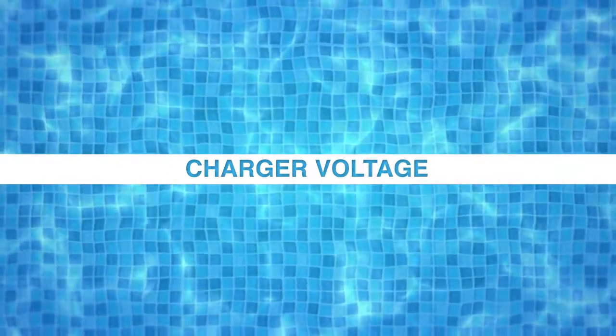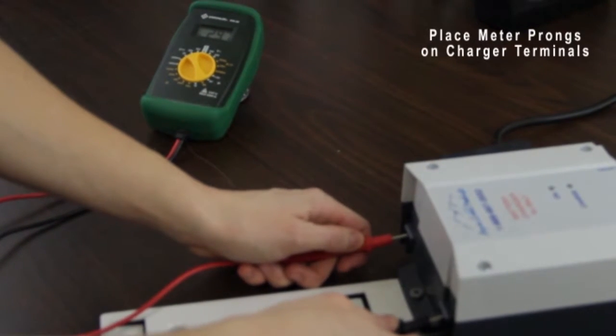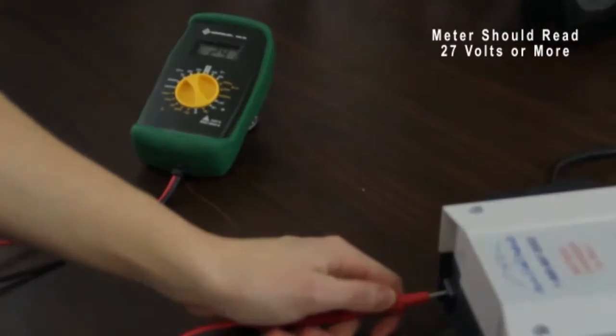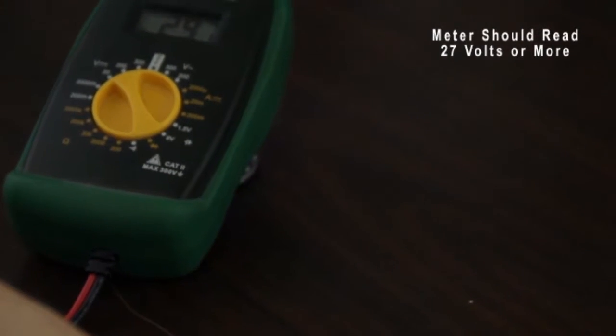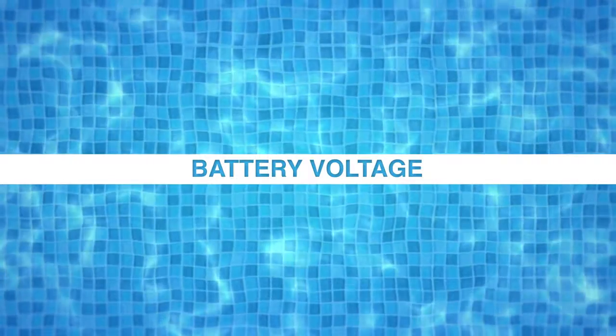To check the charger, make sure the charger is plugged in. Using your voltmeter, place the prongs on the charger terminals. A good charger will read around 27 volts or more. If your charger reads below 27 volts, it needs to be replaced. If your charger has proper voltage and your lift still doesn't work, you will need to check the battery voltage.